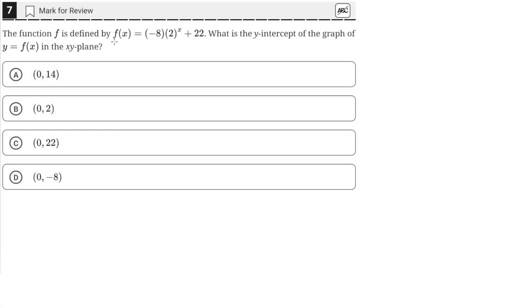The function f is defined by f(x) equals negative 8 times 2 raised to the x plus 28. What is the y-intercept of the graph of y equals f(x) in the xy-plane?